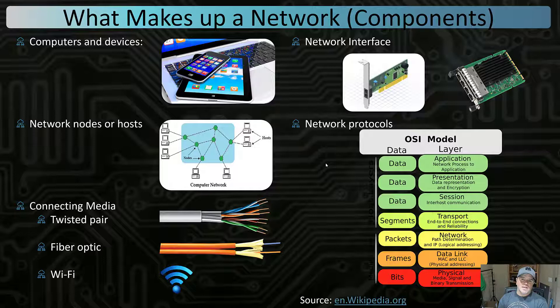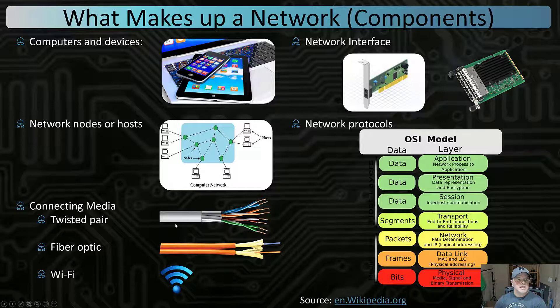Current wireless is Wi-Fi 6. Most of you probably have 802.11ac, 802.11n, or maybe even 802.11g. If those terms don't make sense, don't worry — they will as we go through this series. Physically connecting a network would be through twisted pair, known as Ethernet cable — CAT5, CAT6, CAT7 — or fiber optic. Fiber optic is much faster.